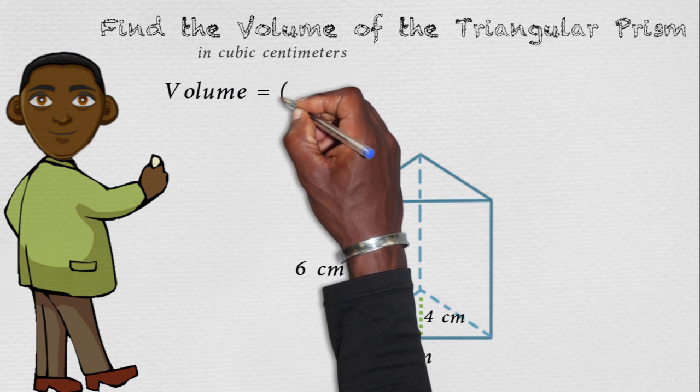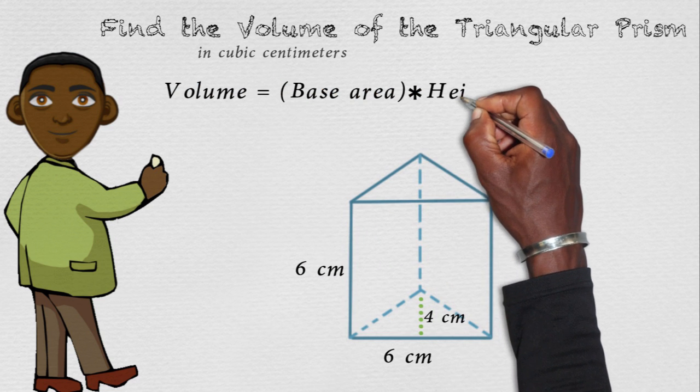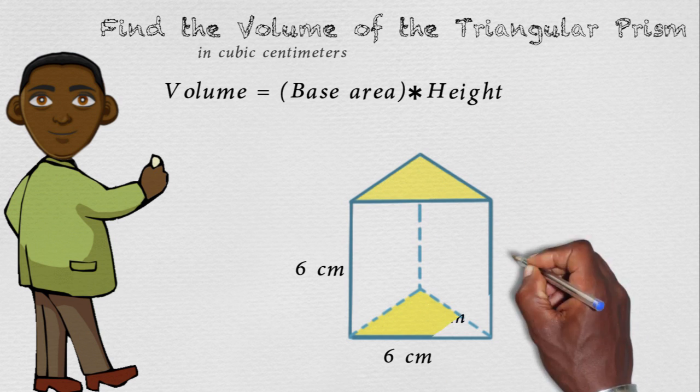The volume of a triangular prism can be represented by the formula area of the base times the height. The base of our triangular prism is a triangle.